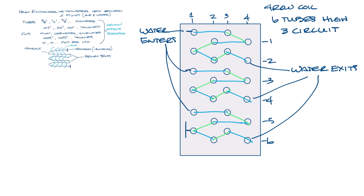So the headers would connect the three circuits like this, and then water would enter the header on the left side of this image, go through the tubes, and exit on the right side. So the water flow in this case is from left to right through this coil.